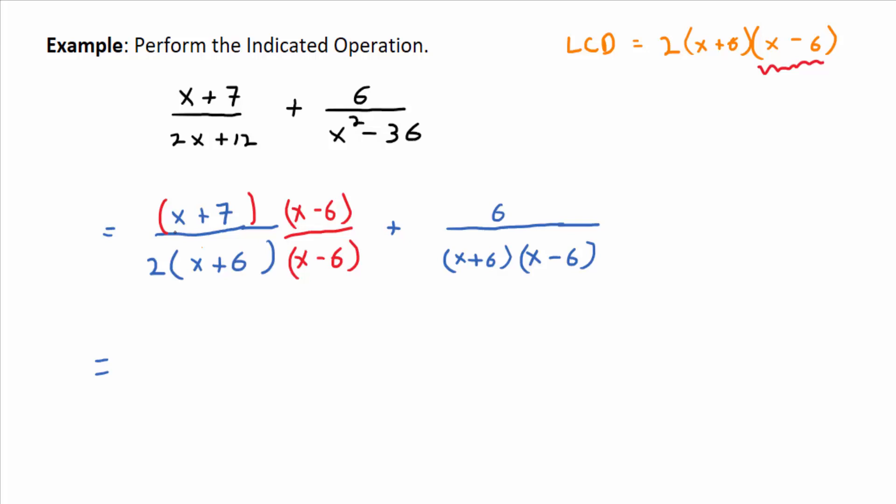Let's look at the second term. What is it missing from the LCD? It's just missing a 2. So you can multiply numerator and denominator by 2, which ends up just multiplying the numerator by 2, the 6 by the 2. And then right away, once you've done that, you could write one big fraction with the common denominator of 2 times x plus 6 times x minus 6. In the numerator you have the product x plus 7 times x minus 6, and then plus 12.